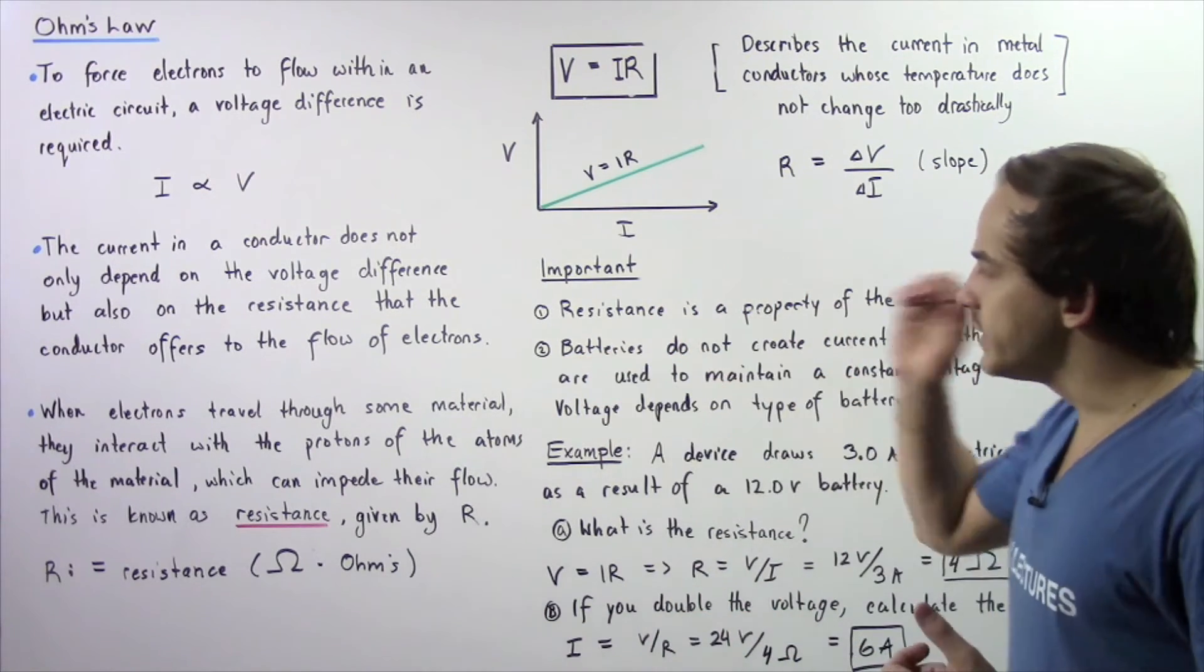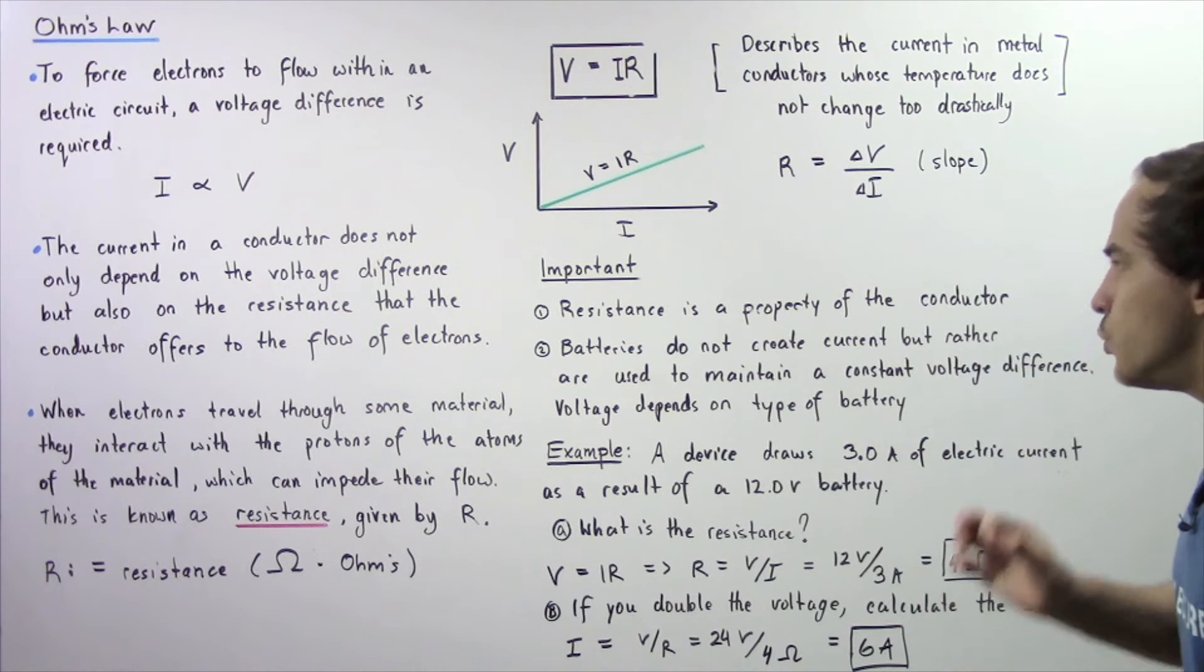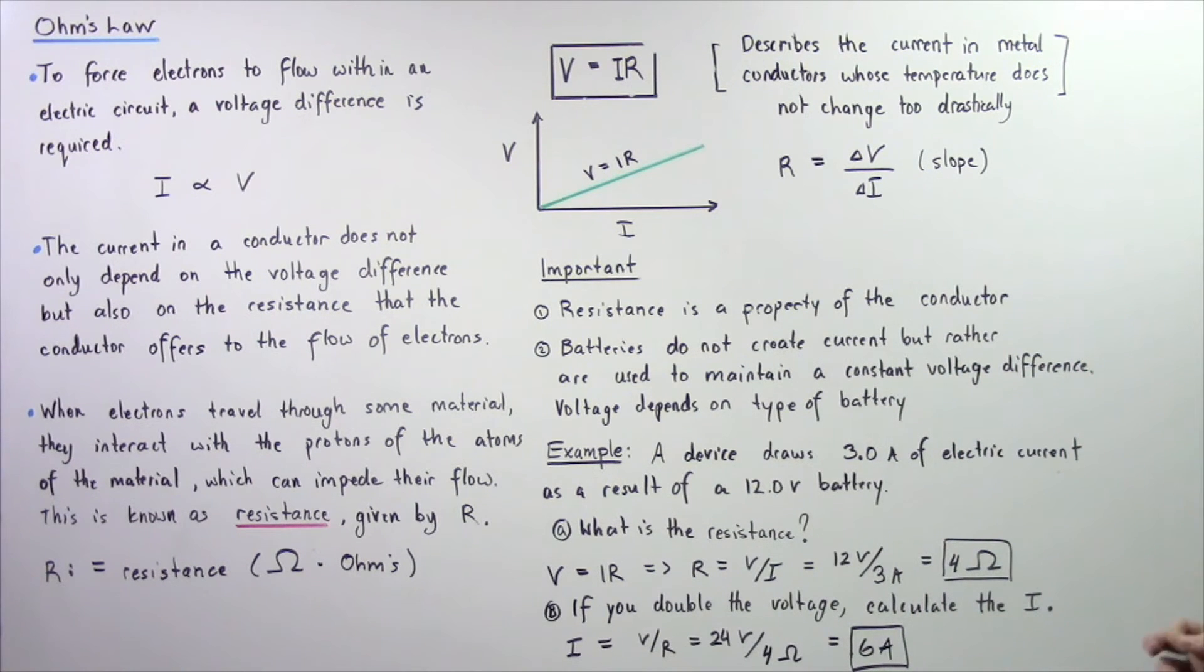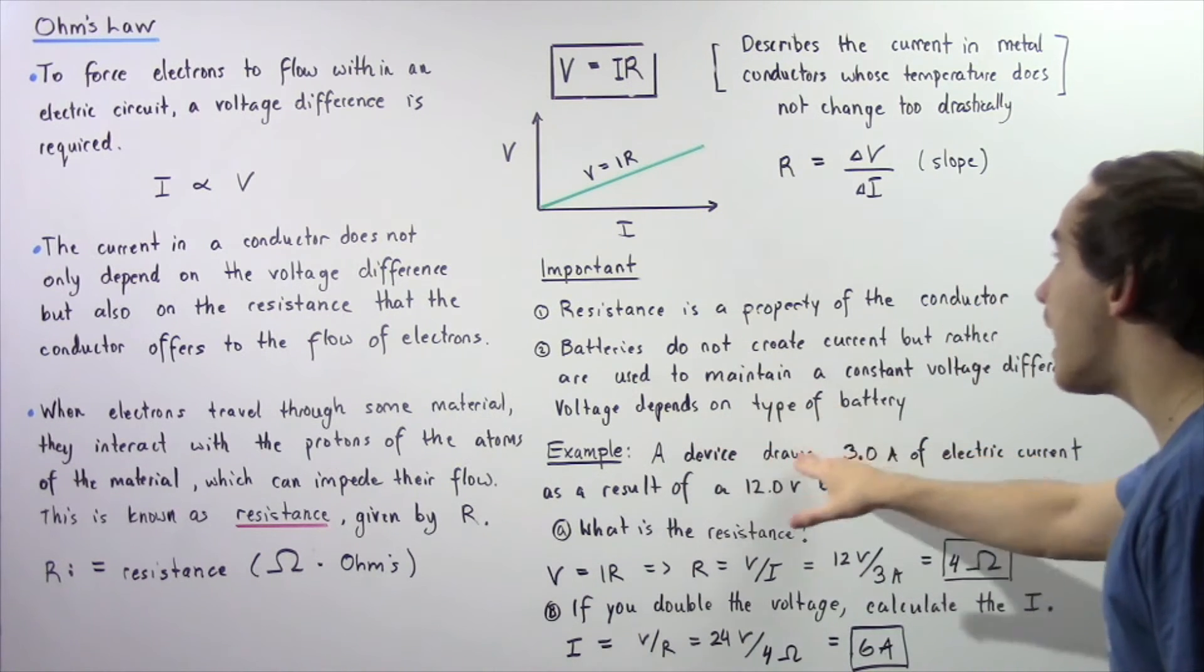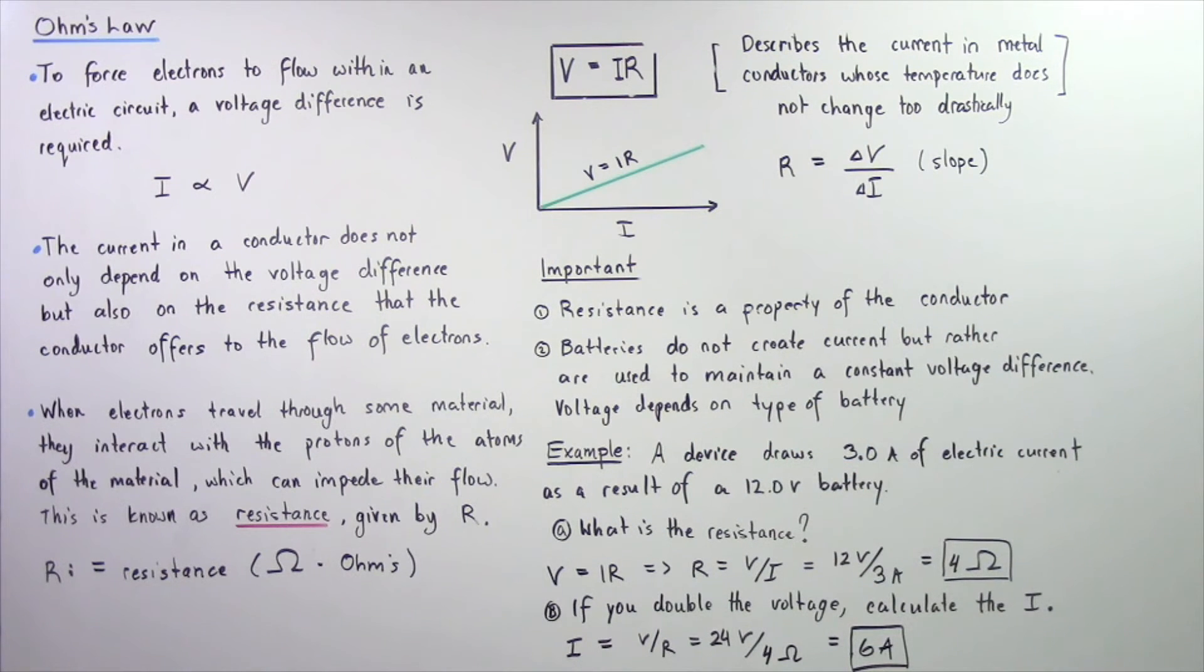Now let's examine point number two. Batteries do not actually create electric current but rather they are used to maintain a constant voltage difference. The voltage depends on the type of battery that we are using.